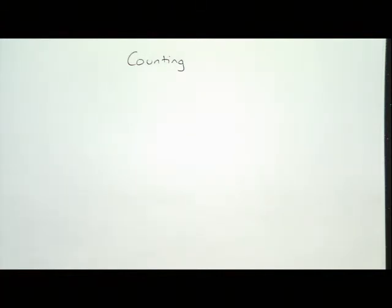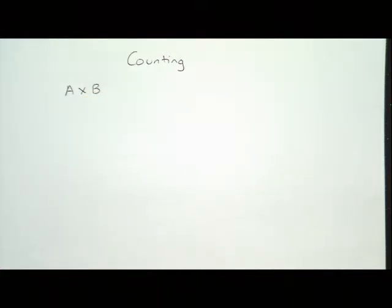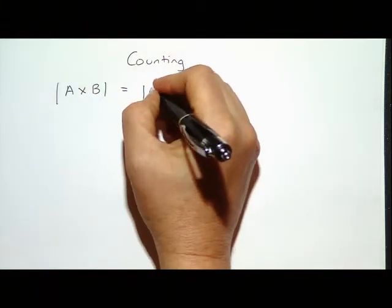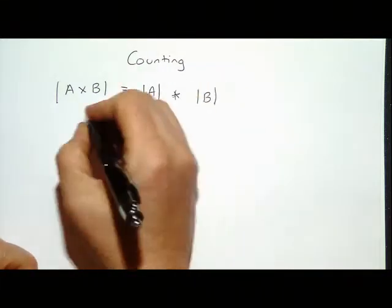The first thing we want to do is talk about some basic things. We've already defined the Cartesian product of two sets. If I have a set A and a set B, I can define their cross product. We know the size of A cross B: if I have two points in A and three points in B, then the cross product has six things. So it's the size of A times the size of B. This is called the product rule.